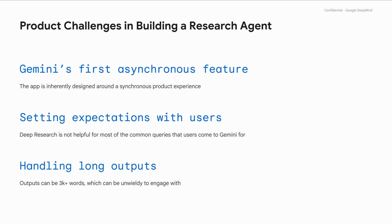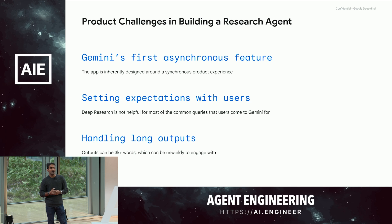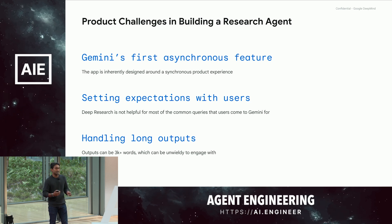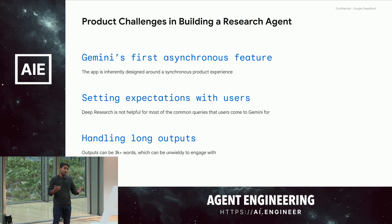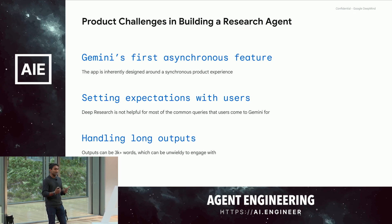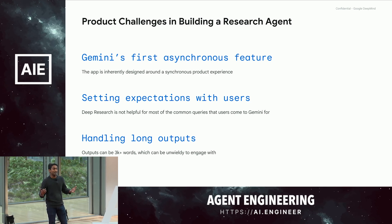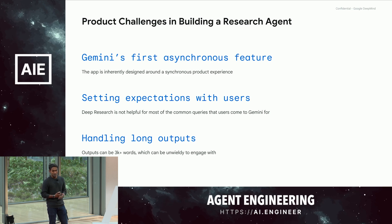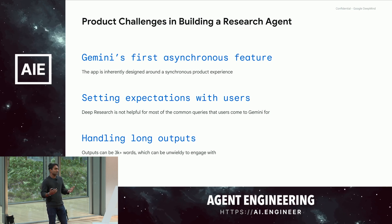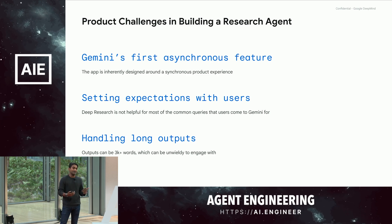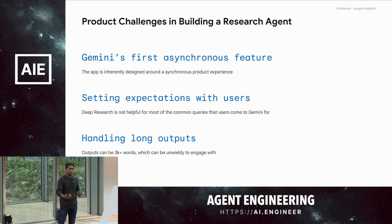This brought a bunch of product challenges for us. Gemini up to this point is an inherently synchronous feature — it's a chatbot. We needed to figure out how to build asynchronous experiences in an inherently synchronous product. We also wanted to set expectations with users: deep research is good for one very specific thing, but a lot of user queries are things like what's the weather or write me a joke, where waiting five minutes is not going to get you a good answer. And the last thing is our answers can be thousands of words long, and we needed to figure out how to make it easy for users to engage with really long outputs in a chat experience.